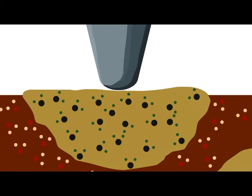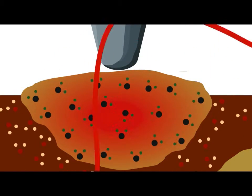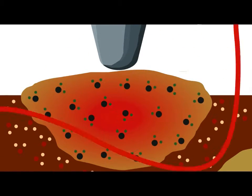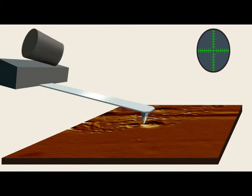If we tune to a wavelength where the sample absorbs, then that infrared light excites the molecules in the sample. Part of that light turns into heat and causes a rapid thermal expansion of the sample.